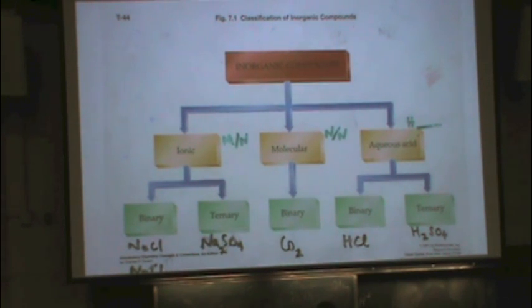Now, within ionic, there's two subcategories. It could be binary or ternary. Binary means there's only two different atoms involved, like sodium chloride, NaCl. That's a type of naming that has its own system of naming.